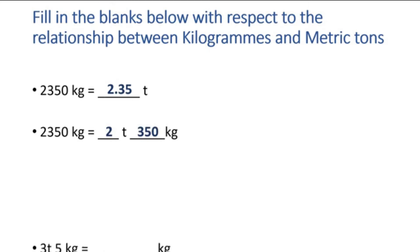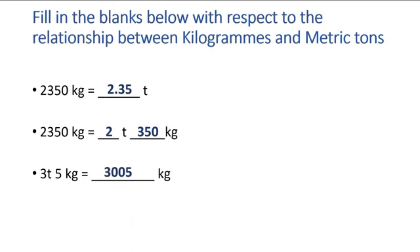Moving on to another question: 3 tons and 5 kilograms, we are going to write in kilograms. 3 tons is 3000 kilograms, and 3000 kilograms plus the 5 kilograms is 3005 kilograms. And then, if 3 tons and 5 kilograms is requested to be written in tons, it will be like this — because 5 kilograms is equal to 0.005 tons.